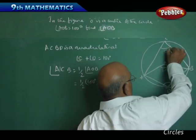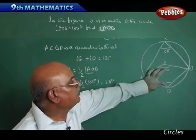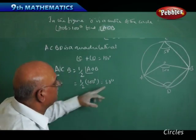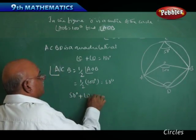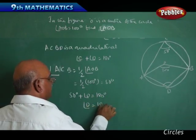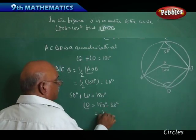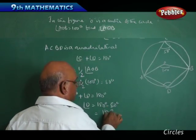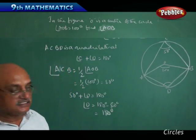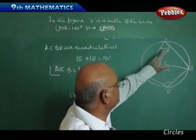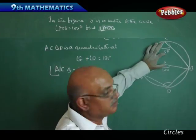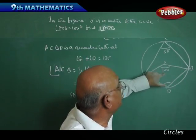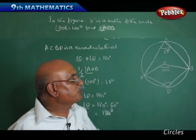If angle C is 50 degrees and angle AOB is 100 degrees, naturally we can find angle D using angle C plus angle D equals 180 degrees. Therefore, 50 degrees plus angle D equals 180 degrees. Angle D equals 180 degrees minus 50 degrees, which is equal to 130 degrees. Here I applied two properties: one is the sum of opposite angles equals 180 degrees, and the next is that the angle at the center is double the angle at the vertex.